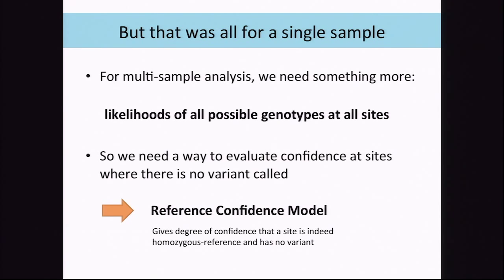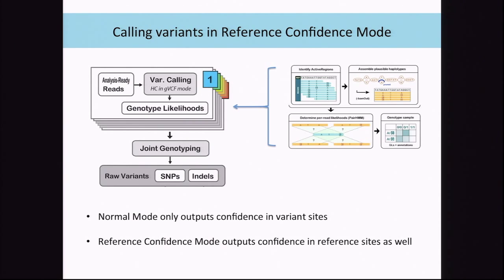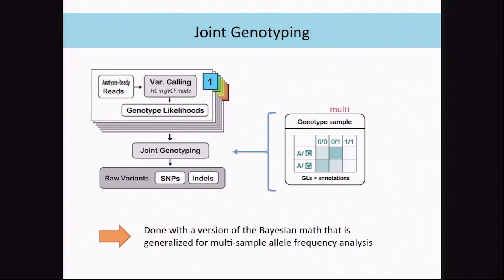All four of those steps are for a single sample. But we learned it's better to call variants in cohorts, so for multiple sample analysis we need something more — that's why we developed the reference confidence model. This gives us the likelihoods of all possible genotypes at all sites. In normal HaplotypeCaller mode only variant sites come out, but in reference confidence model mode we assign a genotype and likelihood for all genotypes at all non-variant sites as well. Then we run joint genotyping using fancy Bayesian math for multiple sample analysis.